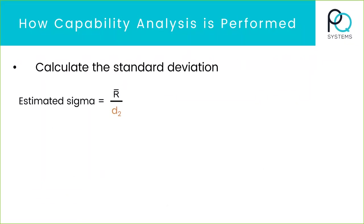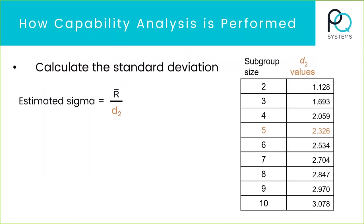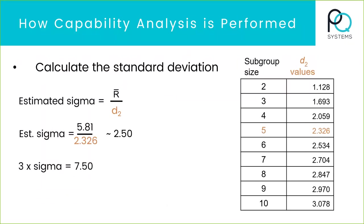Next we want to calculate the standard deviation. It's a simple formula: the average range over D2. D2 — I always look it up; it's in the back of a stats book. For a subgroup size of five, it's 2.326. So in this example, our estimated sigma is about two and a half. If we multiply that by three to get three standard deviations and add and subtract that from the mean, you get 2.5 to 17.5. So as I look at this distribution, right away you know things are not good — your specifications are inside of the plus-or-minus three sigma. You want to have your specifications outside of that.